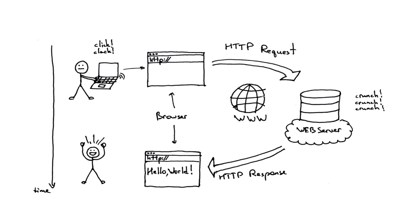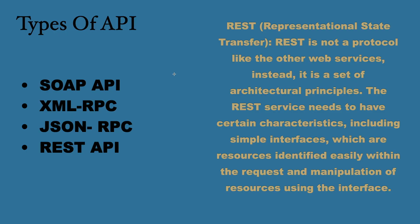Now suppose you click on facebook.com. What happens? Facebook asks you for a username and password. If you don't provide a username and password, it is not going to provide you with any information. So with how the API works, you have to authenticate with that API, and then it takes the information from the web server and gives it to the client side. There are types of APIs: the first is the SOAP API, the second is XML-RPC, the third is JSON-RPC, and the fourth is the REST API.